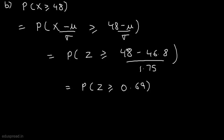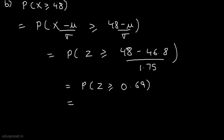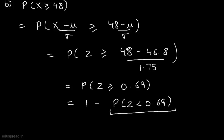Using the complement rule, we can write that this probability equals 1 minus the probability that z is less than 0.69. From the standard normal table, you can find that this probability is equal to 0.7549. And this means the probability that x is greater than or equal to 48 is 0.2451. So this is all about part B.